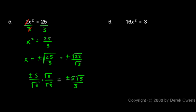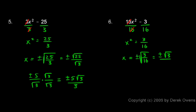In example number 6, 16x squared equals 3. I'll divide each side by 16. The 16's cancel and I'm left with x squared equals 3 sixteenths. I take the square root of each side and get x is plus or minus the square root of 3 sixteenths. I'll write that as plus or minus the square root of 3 over the square root of 16. The square root of 16 simplifies nicely — that's simply 4. So I end up with plus or minus the square root of 3 over 4, and I'm done. I don't have to rationalize the denominator because it's already a rational number, and having a radical in the numerator is okay.